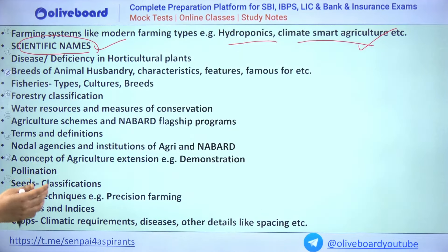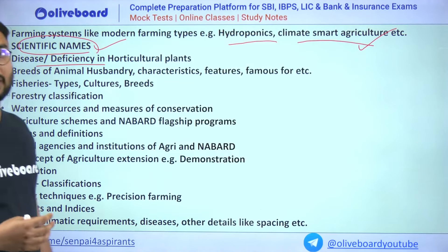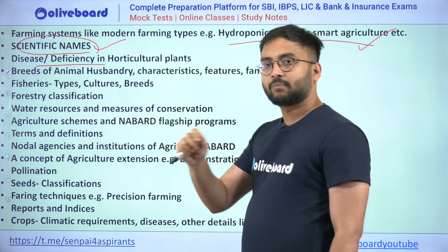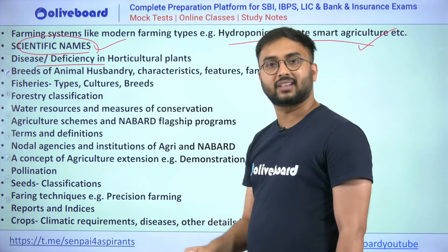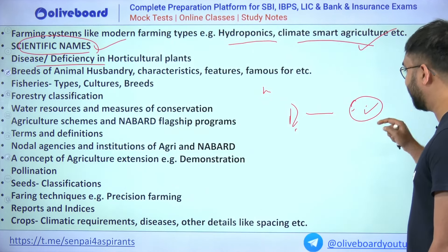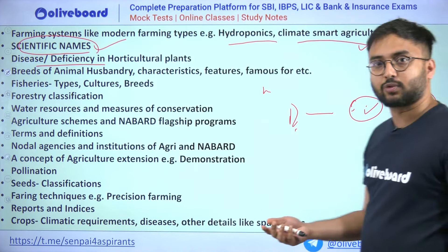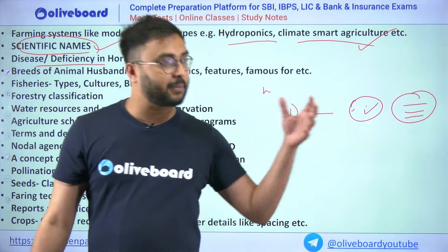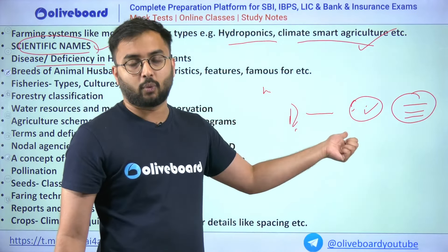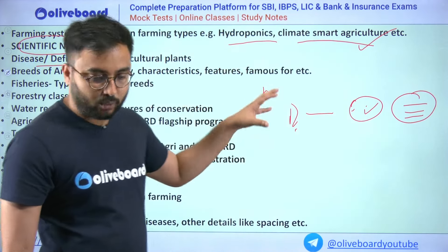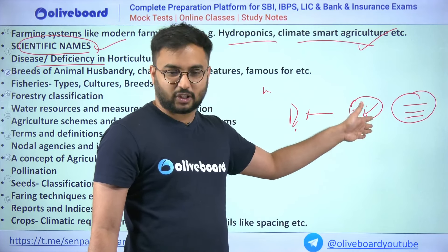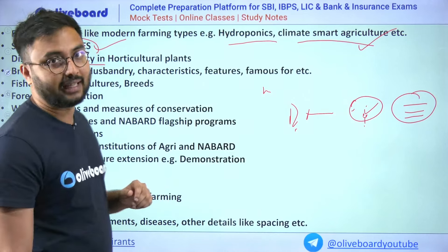Scientific names of all crops must be covered. For diseases and deficiency of horticultural plants, make a table listing all crops with three columns: disease caused by pathogen, by insects, and by nutrient deficiency. For each disease, write what it is, which pathogen, insect, or nutrient deficiency causes it, and what specific symptoms occur. For example: what happens in chlorosis, downy mildew, or powdery mildew? A thorough table can be made in under an hour and will earn you marks easily.